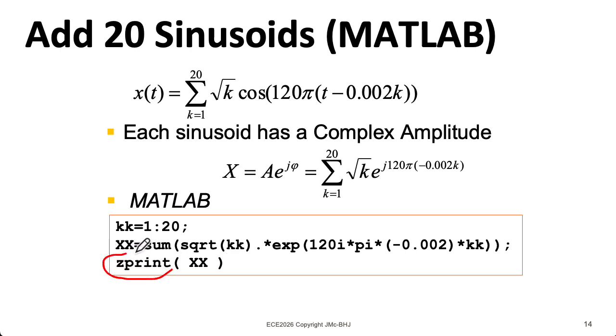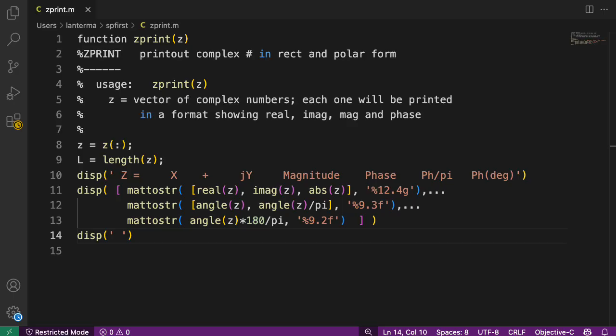The non-pretty way will just be the rectangular form, but zprint will give you the rectangular form, and then it will also give it to you in polar form with a phase three different ways. Phase in radians, the phase in radians divided by π, so you can think of it as this number times π, and the phase in degrees.